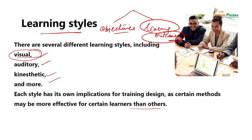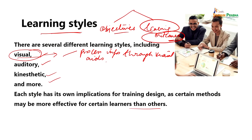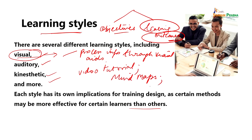Visual learners generally prefer to process information through visual aids such as charts, diagrams, graphs, and videos. They benefit from seeing information presented in a structured and organized manner. When designing training for visual learners, consider incorporating more PowerPoint presentations, infographics, video tutorials, mind maps, and flip charts. There are several platforms that help provide a good visual aesthetic and visual experience for learners.